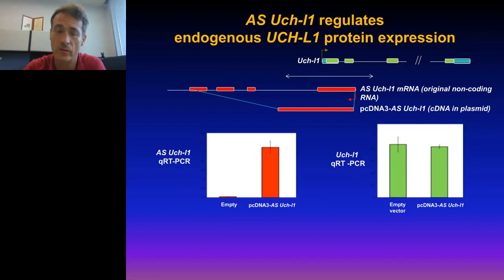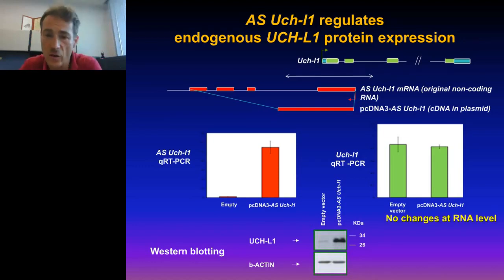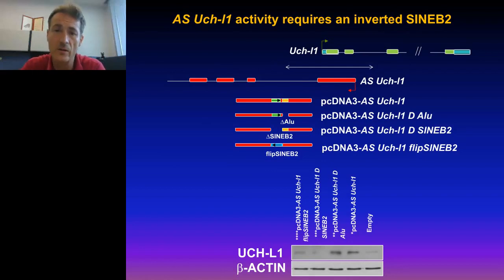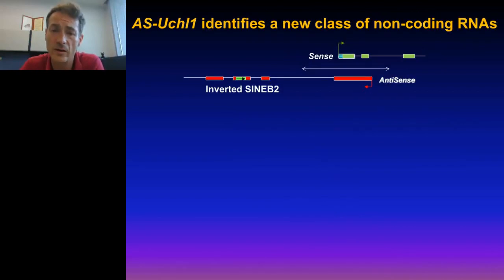We were kind of disappointed because we thought we would not get any interesting science out of this. But we finally measured the amount of protein, and surprisingly we found that in the presence of the antisense there is much more protein — tenfold or more protein produced. So there is no change of RNA level but a dramatic increase of protein level — caused by the antisense. We started to dissect this, and to make the story short, we found a part in the antisense — represented with a green box — that contains a SINEB2 element in the antisense orientation. If we delete this element — the delta-SINEB2 — we don't see this effect on protein translation anymore, suggesting that the SINEB2 element is essential for this translational effect.